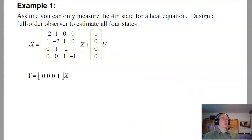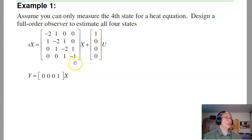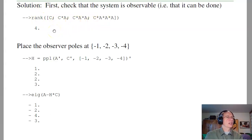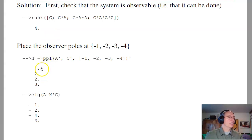Let's do an example with the fourth-order heat equation: can I build an observer to determine all four states, only measuring the last state — the tip temperature? First, check observability: the rank of [C; CA; CA²; CA³] is 4, so the system is observable and I can build a full-order observer. For observer pole placement, let's put them at minus 1, minus 2, minus 3, and minus 4. The observer gains come out to 1, 2, 2, 3. As a check, the eigenvalues of A minus HC are indeed minus 1, 2, 3, 4.